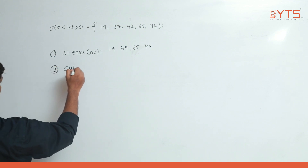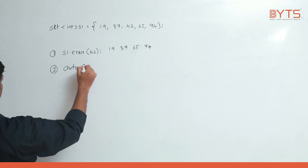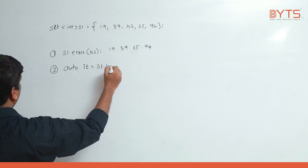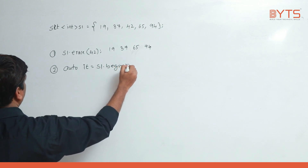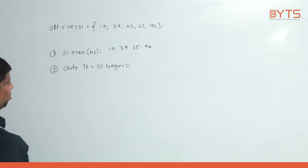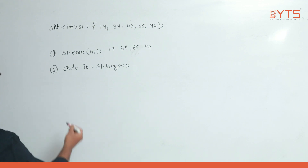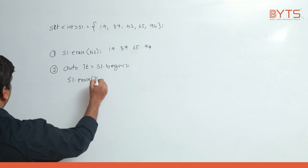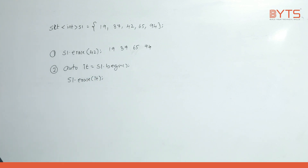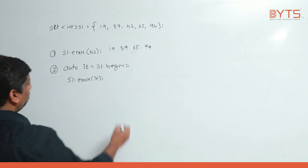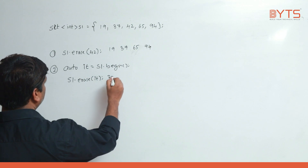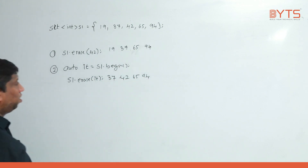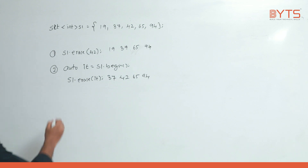auto it = s1.begin() — now it is pointing to the first location. s1.erase(it) means the element at that location is deleted. So what happens: 37, 42, 65, 94 remain. This is erasing at the first location.